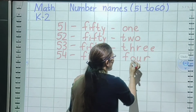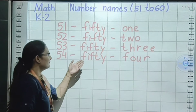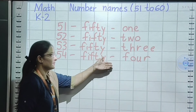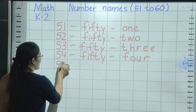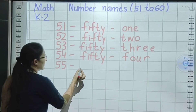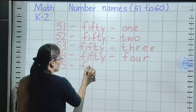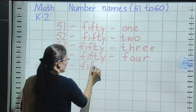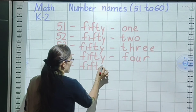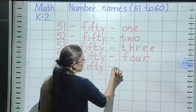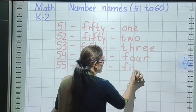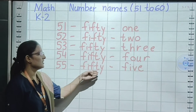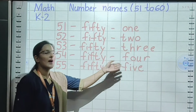Move on to the next. 54. Small sleeping line. F, I, F, T — fifty. Small sleeping line. Now spelling of 4: F, O, U, R — four. So 54 is fifty-four.